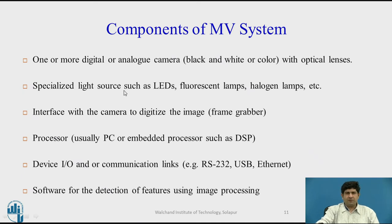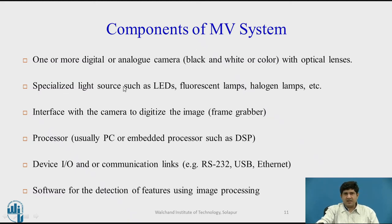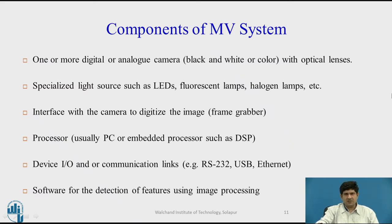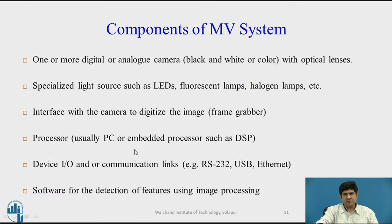Components of a machine vision system typically include: first, the camera itself, which may be a CCD camera or a CMOS camera. In machine vision applications, CCD cameras are still preferred, but CMOS cameras are catching up. Then you have specialized light sources with specialized illumination, the interface for the camera, the main processor, and possibly a dedicated signal processor. You also have device input/output communication systems and the software for detecting features. This is what comprises a complete machine vision system — it's not just the camera. It includes the lighting, all the accessories, interfaces, cables, and the software.